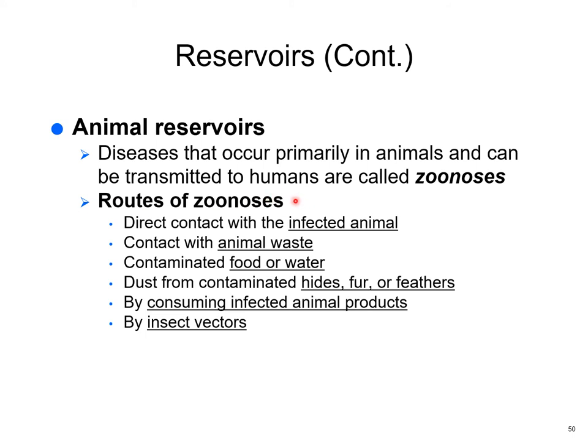Types of zoonotic transmission include direct contact with an infected animal. For example, a dog with ringworm — which is actually a fungal infection — can transmit it to children who play with the dog despite warnings not to. That's a zoonotic disease. Contact with animal waste is another route — not washing your hands after handling a litter box and then preparing food is effectively transmitting fecal contamination.